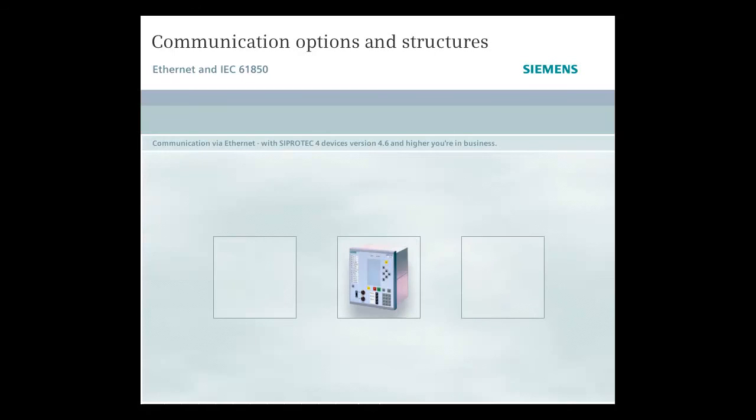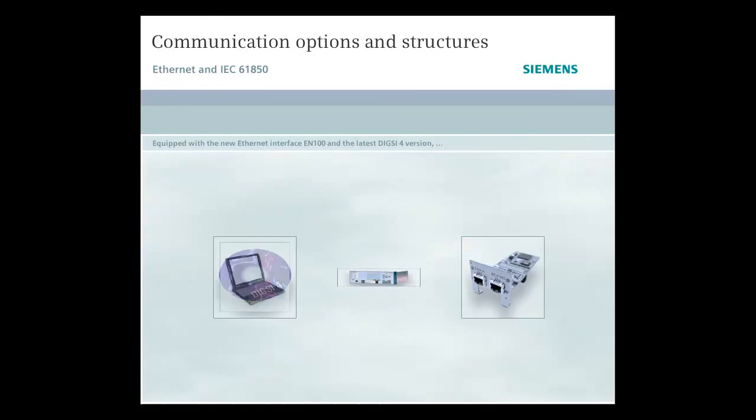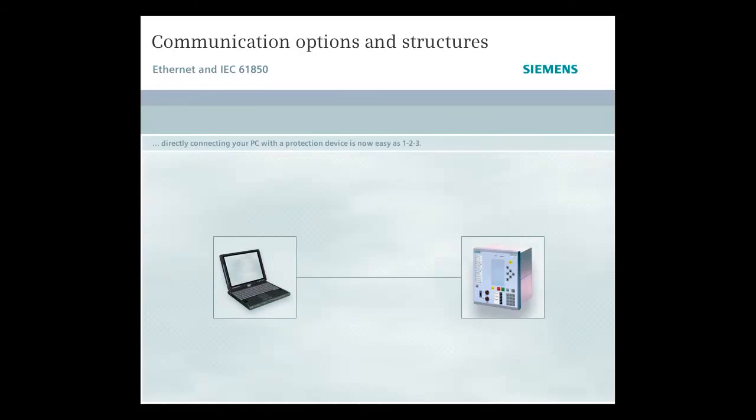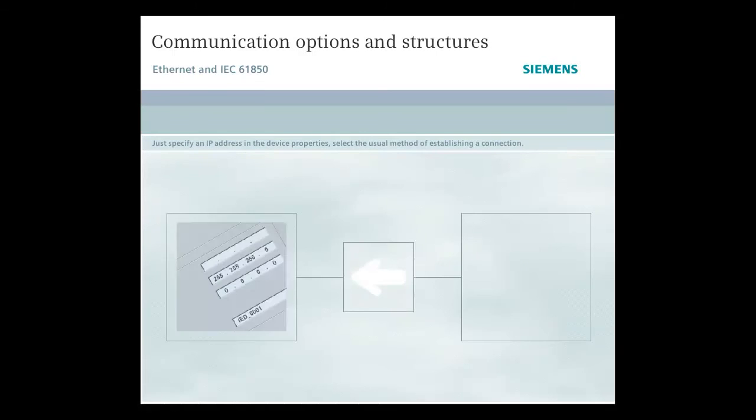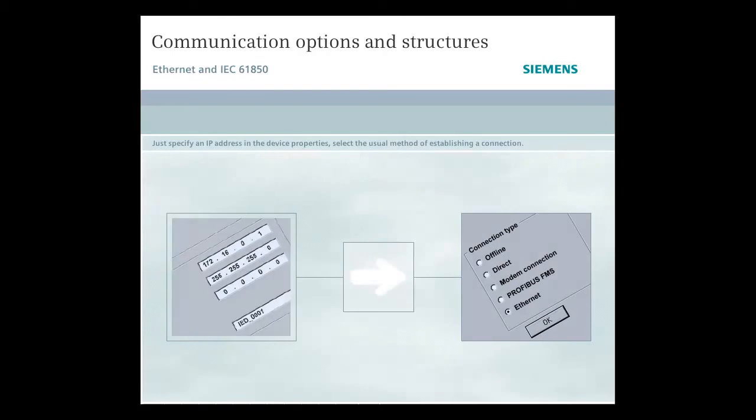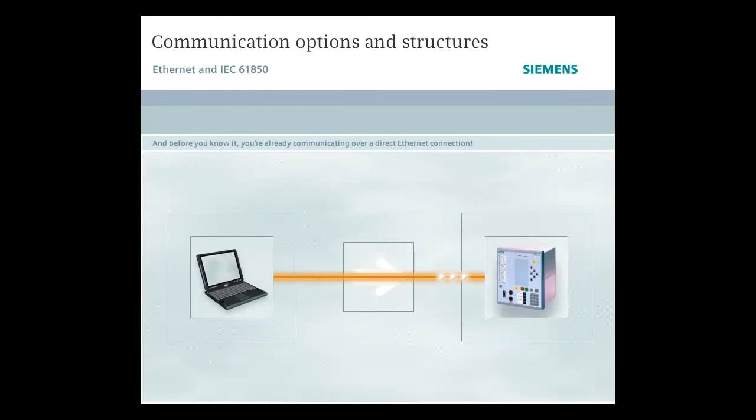Communication via Ethernet with C-Protect 4 devices, version 4.6 and higher, and you're in business. Equipped with the new Ethernet interface EN100 and the latest DIGSI 4 version, directly connecting your PC with a protection device is now as easy as 1, 2, 3. Just specify an IP address in the device properties, select the usual method of establishing a connection, and before you know it, you're already communicating over a direct Ethernet connection.